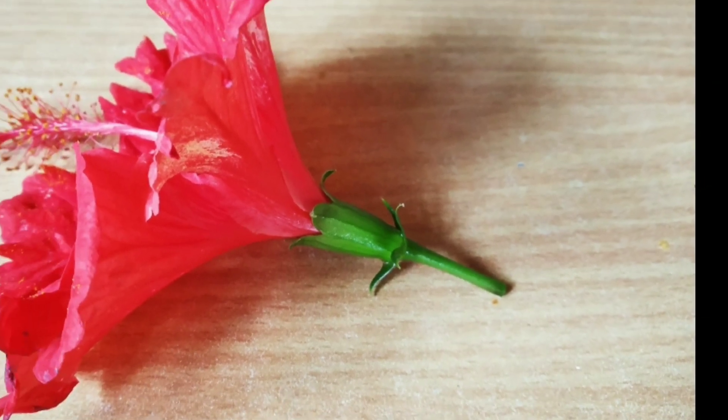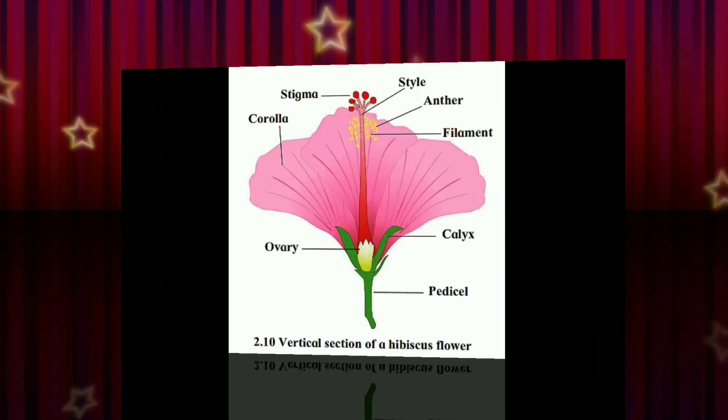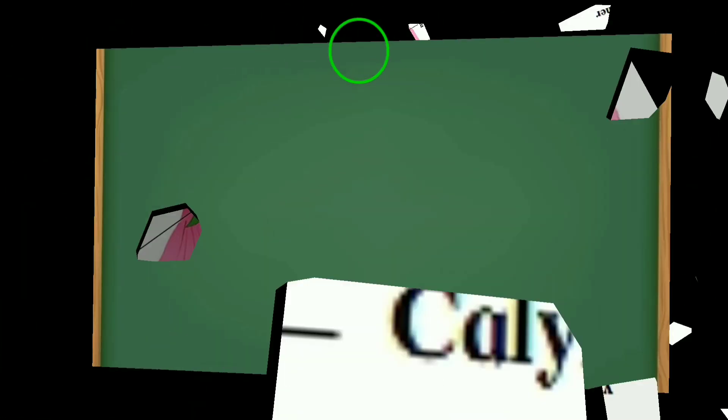This is called the receptacle. Receptacle manches pushpadhar. Phula cha paklaya and itar bhag yaya receptacle var astat. Ata apan phula cha vivid bhag paoya, manches parts of flowers. Calyx, corolla, androecium, gynoecium are different parts of flower.